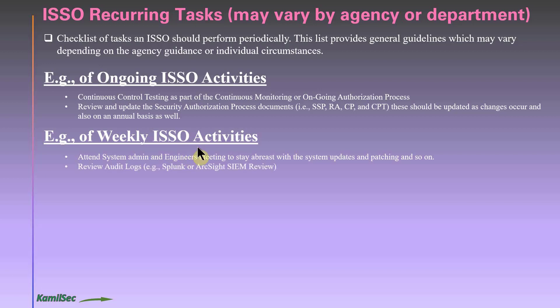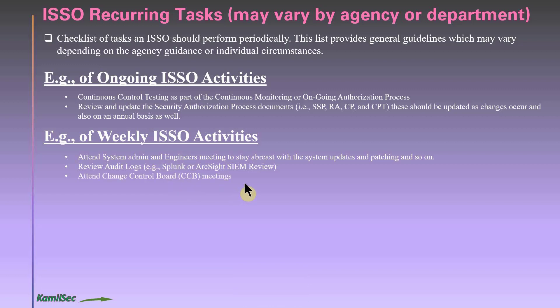Also on a weekly basis, review audit logs — for example, using tools like Splunk or similar SIEM solutions. Review logs to identify anything abnormal. For instance, if you notice a spike in activity during off-hours, like midnight to 2 or 3 a.m., raise the concern with the team. They may explain it was scheduled patching or maintenance. Regular audit log reviews are important to ensure nothing abnormal is happening.